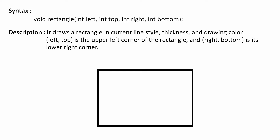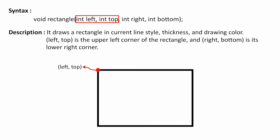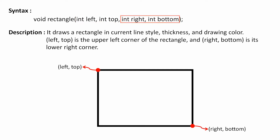To draw a rectangle, graphics.h provides a function called rectangle() which takes four integer arguments: left, top, right, and bottom. The first two arguments, left and top, represent the x and y coordinates of the upper left corner of the rectangle. The remaining two arguments, right and bottom, represent the x and y coordinates of the lower right corner of the rectangle.